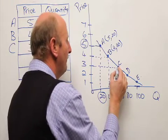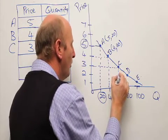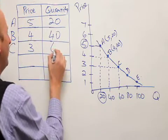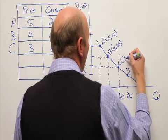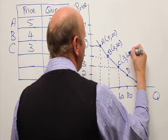The quantity, drawing a line downwards to the quantity axis, and the quantity is 60. So the coordinates for point C is a price of 3 grand and quantity 60.